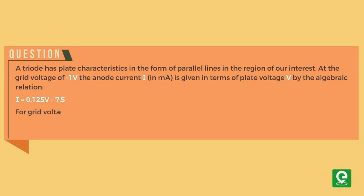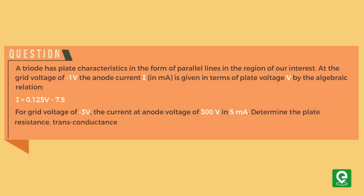For grid voltage of -3 volts, the current at anode voltage of 300 volts is 5 milliamperes. Determine the plate resistance, trans-conductance, and the amplification factor for the triode. This question was asked in IIT JEE 1987.